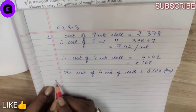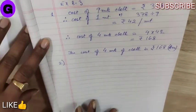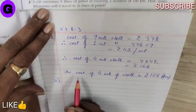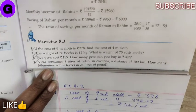Now, sum number 2. The weight of 36 books is 12 kg. What is the weight of 75 such books?